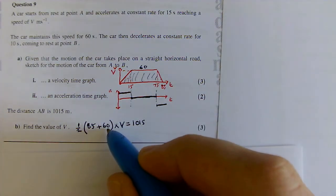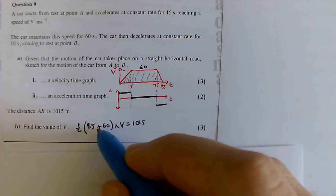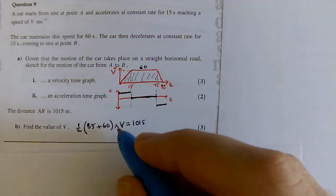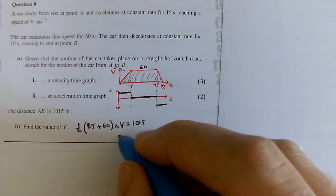Well, 85 plus 60 is going to give me 145. Half of 145 is going to give me 72.5.